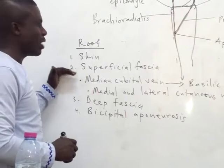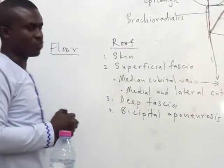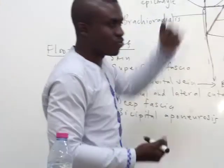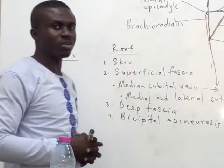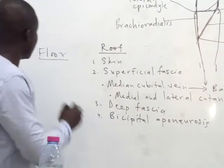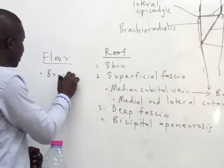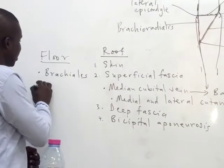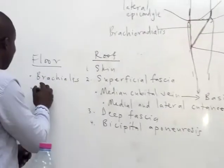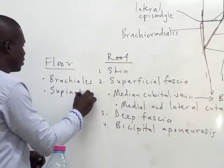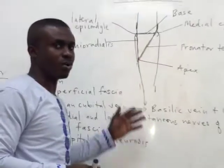Now we've seen the roof. How about the floor? What forms the floor — the bed of this cubital fossa? There are two muscles that contribute to the floor of the cubital fossa. Medially, we have what we call the brachialis muscle. And laterally, we have what we call the supinator muscle. These two muscles contribute to the formation of the floor of the cubital fossa.